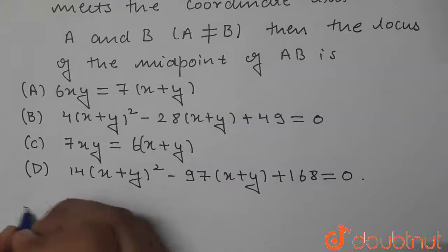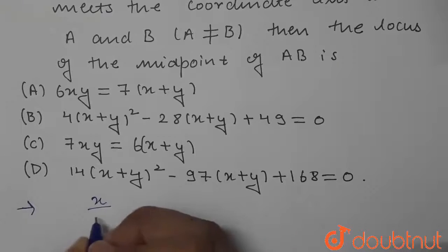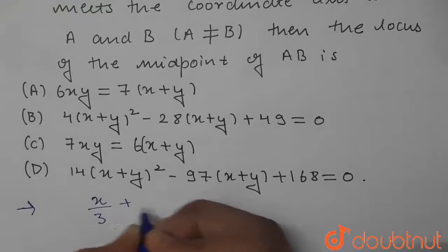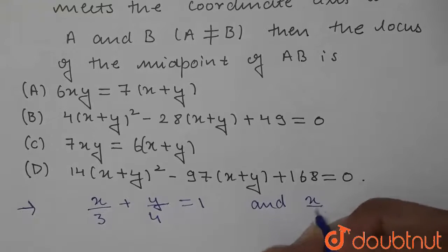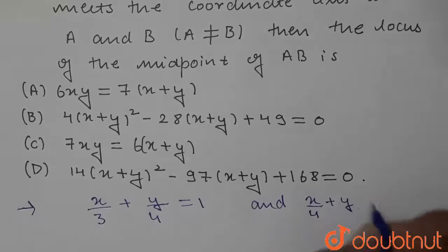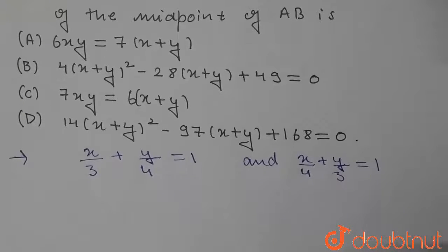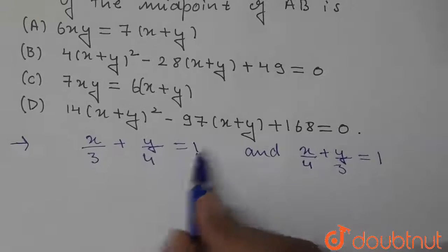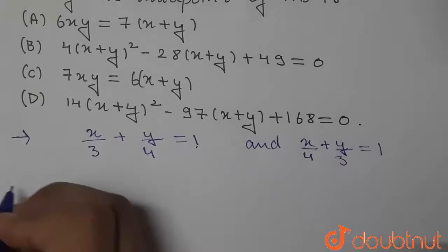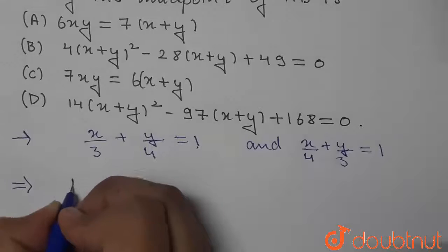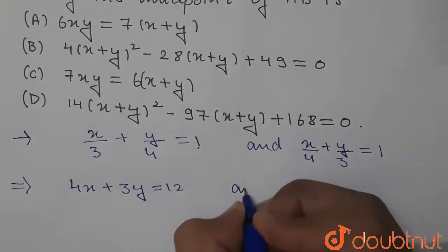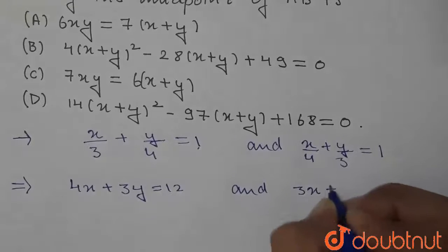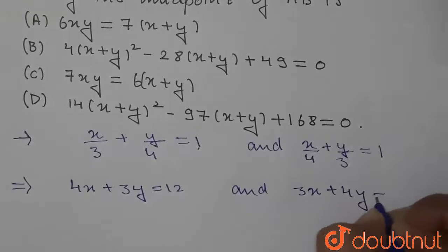Let us start with the solution. We are given the equations of lines as x/3 + y/4 = 1 and x/4 + y/3 = 1. We are going to multiply both equations by 12, giving us 4x + 3y = 12 and 3x + 4y = 12.